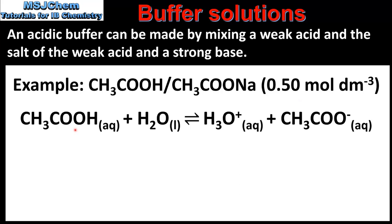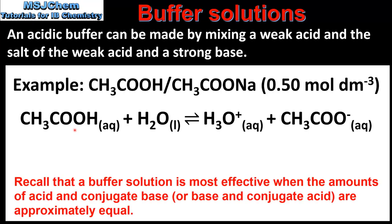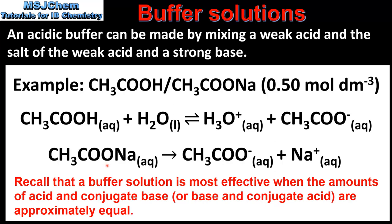Here we can see the reaction between ethanoic acid and water. Because ethanoic acid is a weak acid, the position of equilibrium lies very much to the left, so we can assume that the equilibrium concentration of ethanoic acid is the same as the initial concentration. The salt sodium ethanoate completely dissociates, which means the equilibrium concentration of the ethanoate ion is the same as the initial concentration of the salt. So in this solution we have the same amount in moles of the weak acid, ethanoic acid, and its conjugate base, the ethanoate ion.